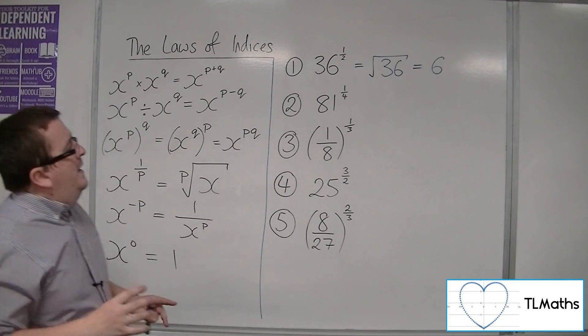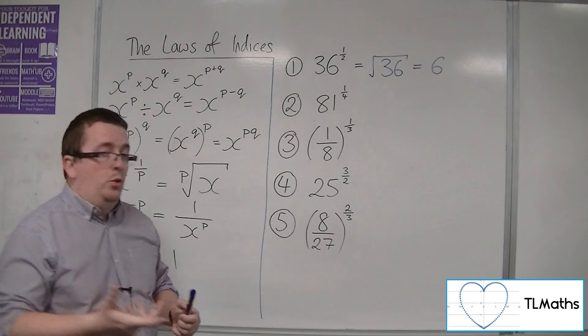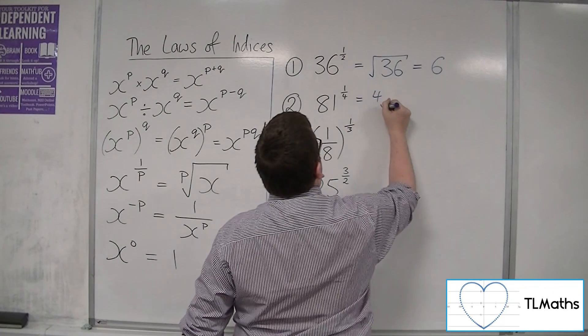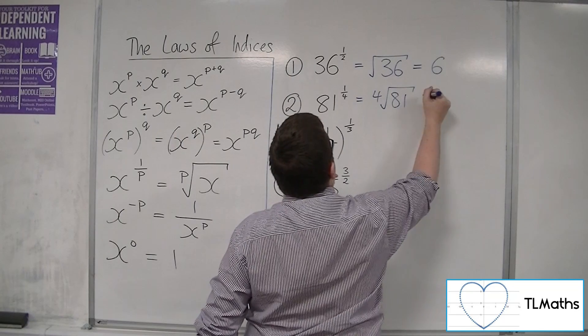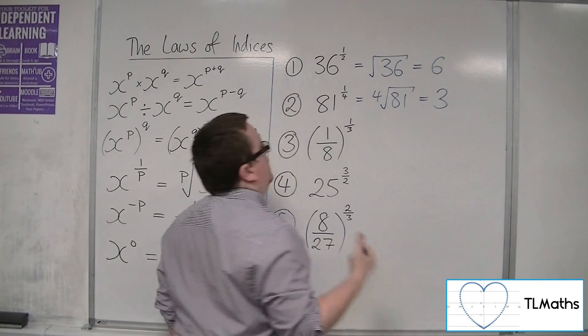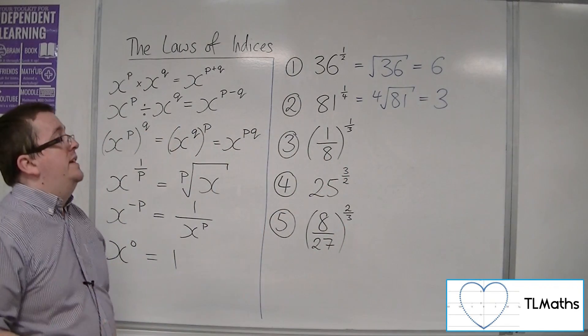Right, so let's have a look at number 2, 81 to the quarter. This is representing the fourth root of 81, and that is 3. 3 times 3 times 3 times 3 is 81.